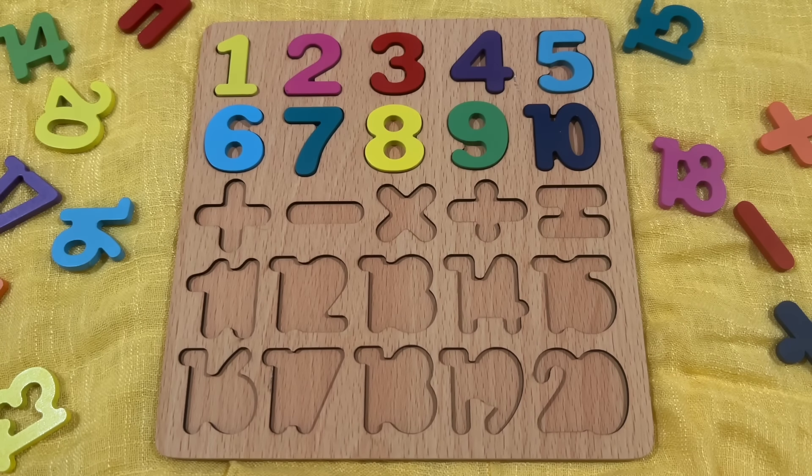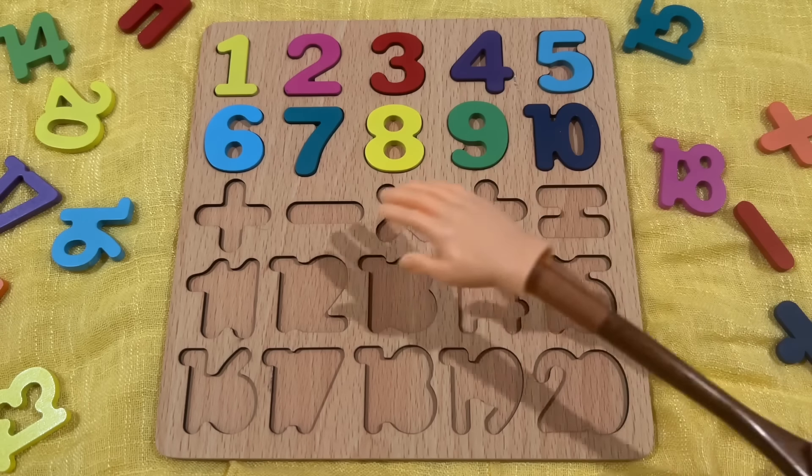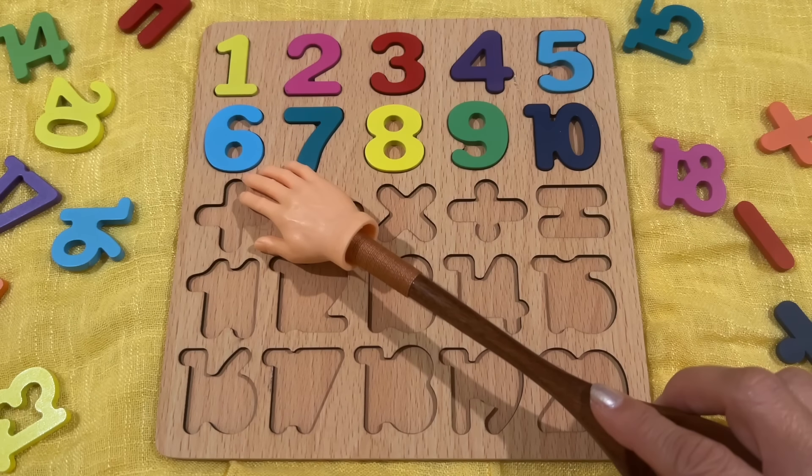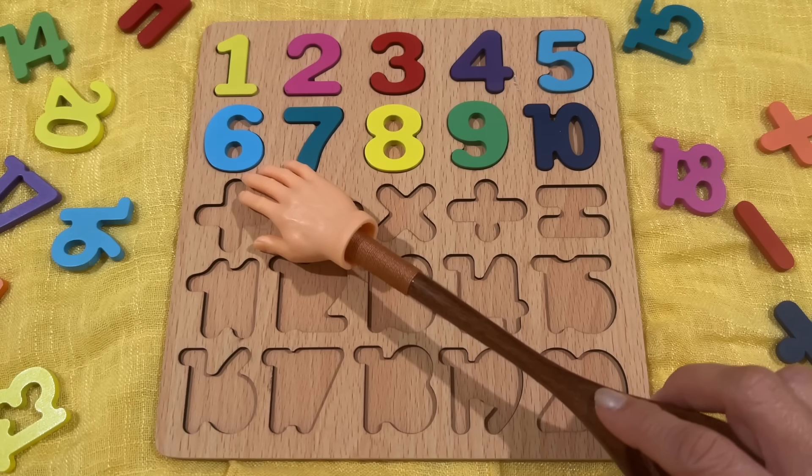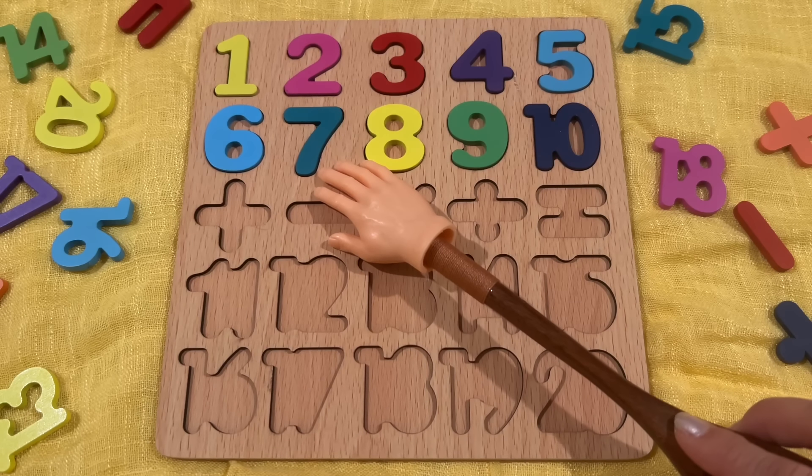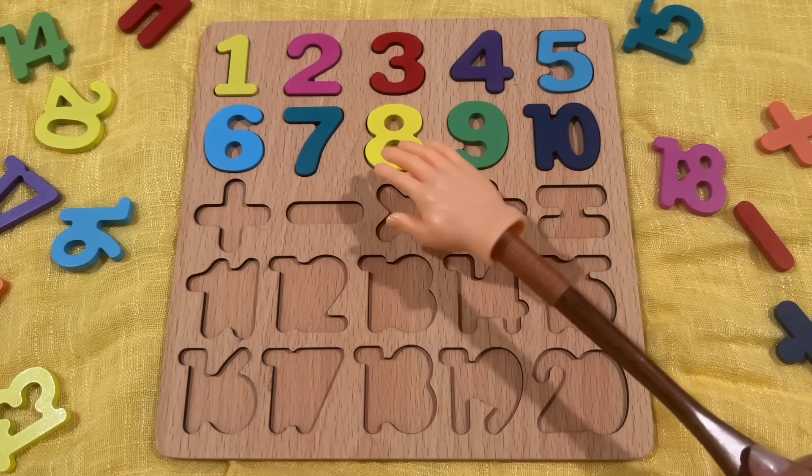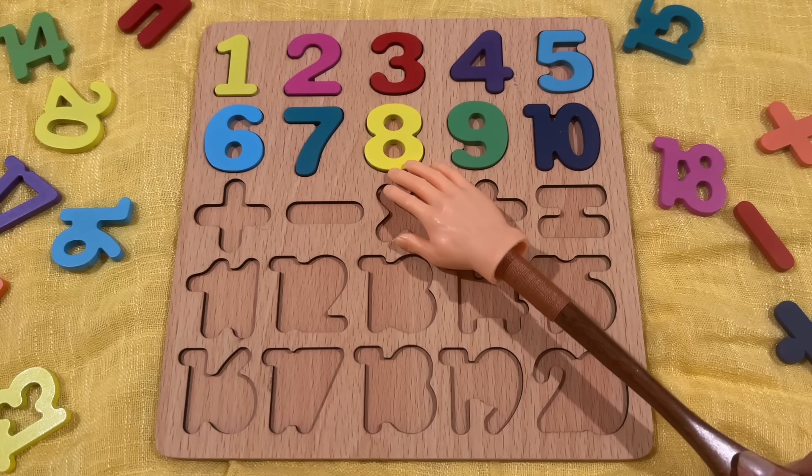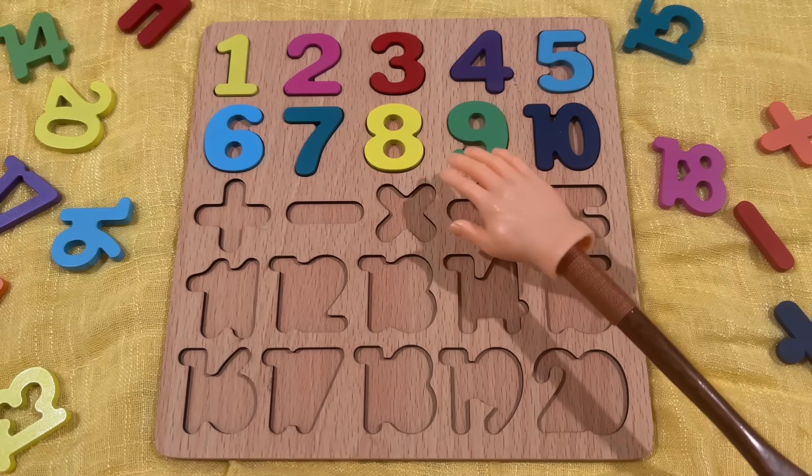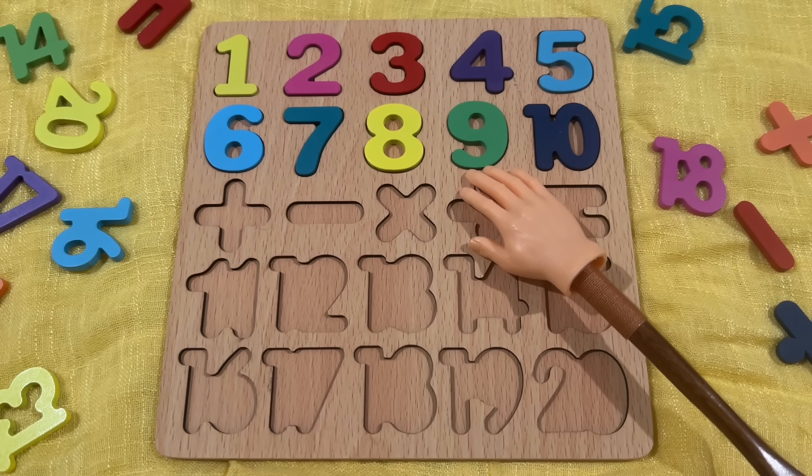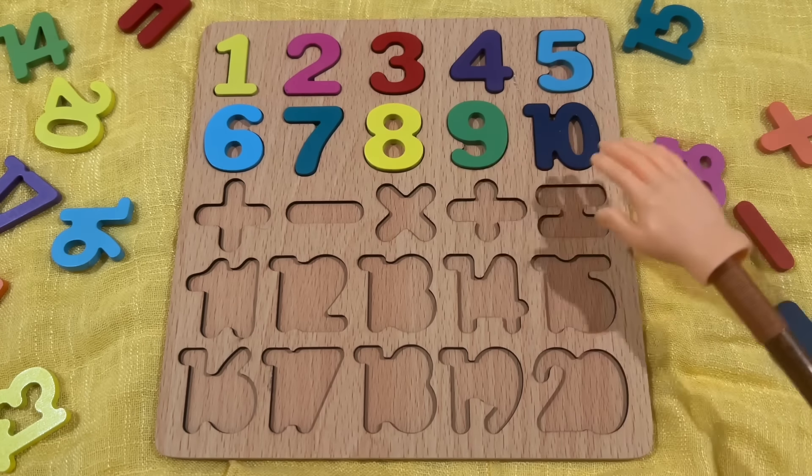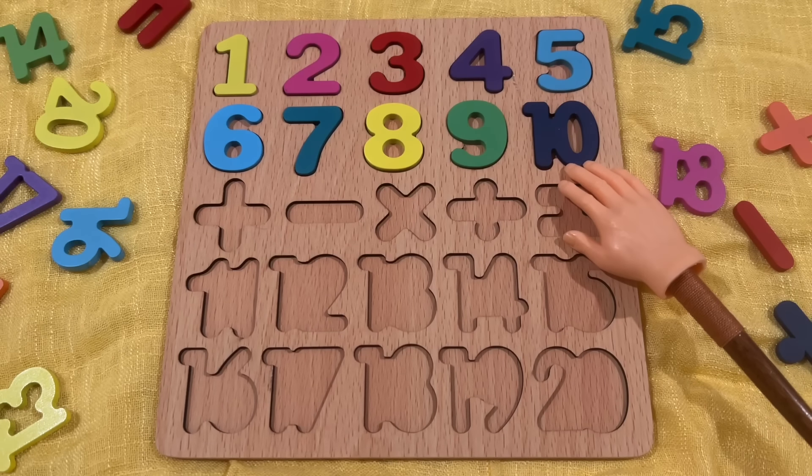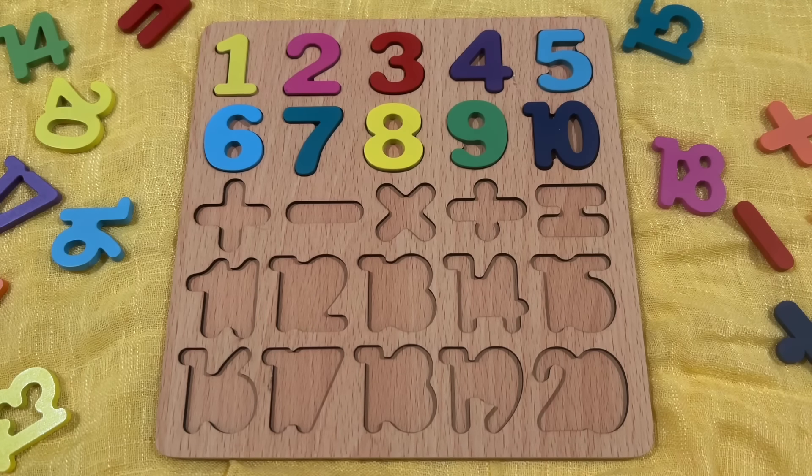So let's review the next line. Number 6, 육. Number 7, 칠 (chil). Number 8, 팔. Number 9, 구. Number 10, 십. Did you get that?